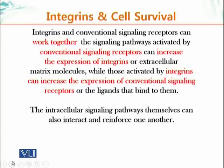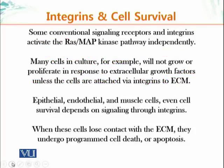The traditional conventional signaling system can affect the number of integrin molecules on the plasma membrane, and conversely, integrins can also result in differential expression of conventional signaling receptors or their ligands. The intracellular signaling pathways can also interact and reinforce one another. Some conventional signaling receptors and integrins can both activate the RAS-MAP kinase pathway independently.